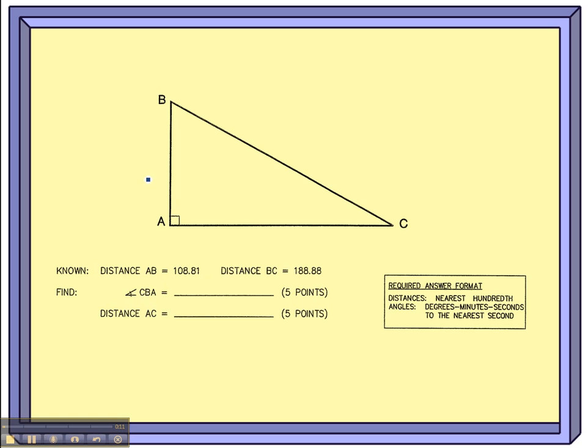You should probably just write that down. The information: AB is 108.81, hypotenuse BC is 188.88. They often give you crazy numbers like this that make it pretty easy for you to mistype them in the calculator.